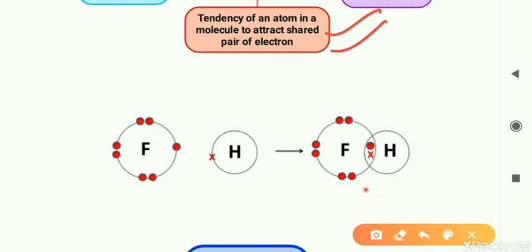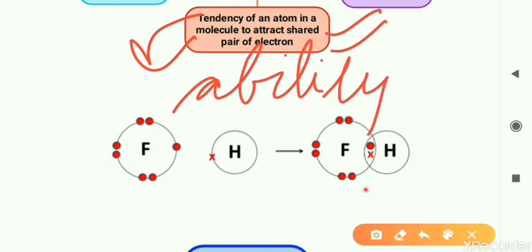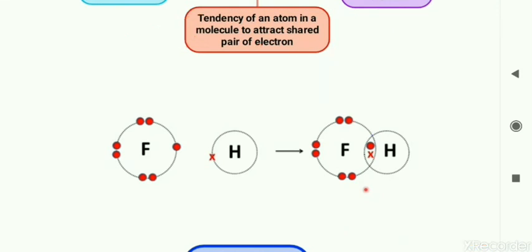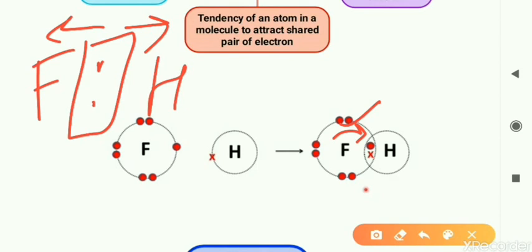The definition says the tendency of an atom to attract a shared pair of electrons — that is, the ability of the atom to attract this pair of electrons towards itself. For example, fluorine: how much ability does it have to attract the shared pair of electrons towards itself? The shared pair will lie somewhere in between hydrogen and fluorine, but this pair will shift either to the left or right side depending on electronegativity. If fluorine is more electronegative, the electrons will shift a little bit towards fluorine — they will not fully become part of fluorine's atom, just shift slightly.